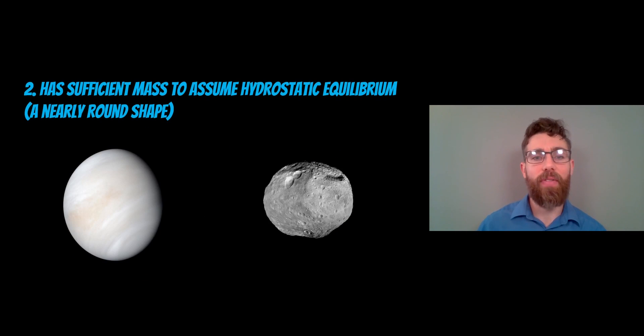The next one is that it has to have sufficient mass to assume hydrostatic equilibrium. What does that mean? It means that it needs to be large enough that its own gravitational force molds it into a more spherical shape. Now, they're not perfectly spherical because they're rotating, so they're flattened at the poles and a bit wider at the equator. But once they get to a certain size, they begin to have a more round shape. Like asteroids, smaller moons, they will have a more potato shape. They don't have enough mass. There's not enough gravitational force there to mold them into this round shape.